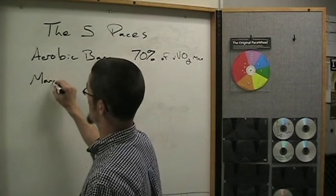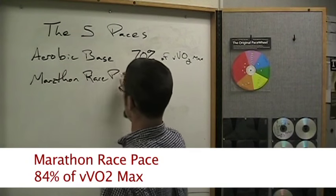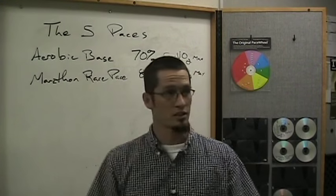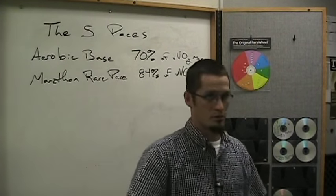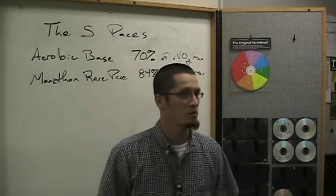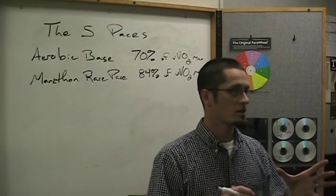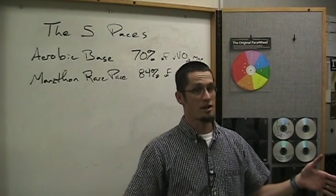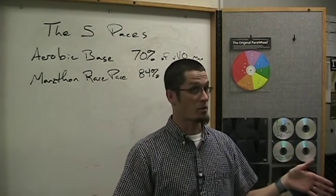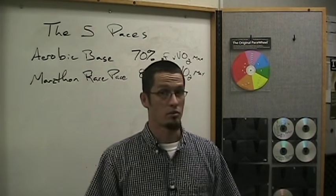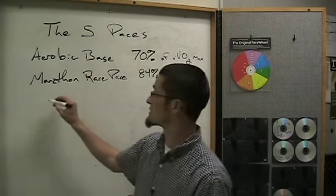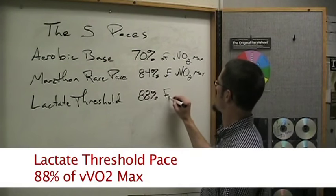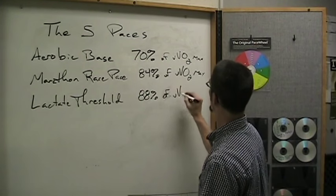Marathon race pace is a training pace only used by marathoners, calculated at 84% of velocity at VO2 max. This is based on research from years of work by Jack Daniels PhD and other physiologists from USA Track and Field and elite circles. They say a marathoner can only run at about 84% of his velocity at VO2 max. From elite to the slowest of the slow, they're approximately 84%. The next pace is lactate threshold pace, at 88% of velocity at VO2 max.